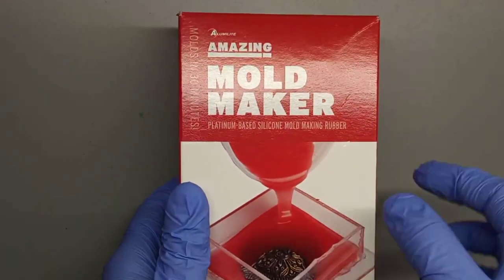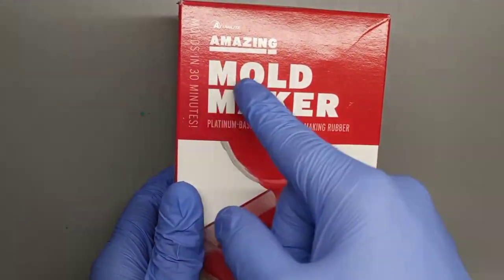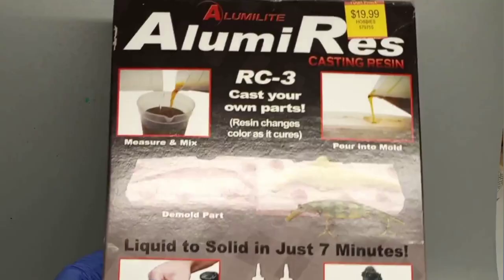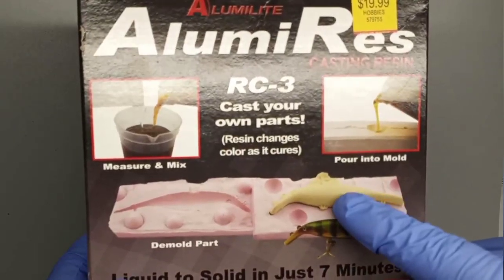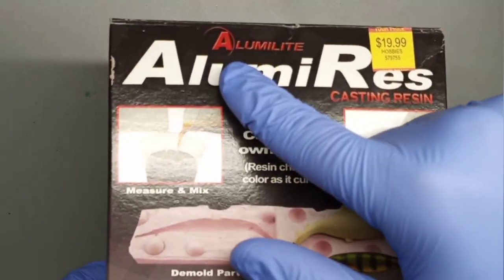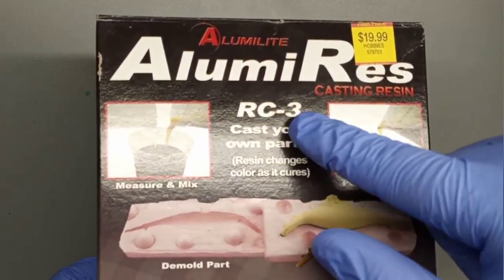Hello, in this tutorial I'm going to show you how to make your own molds using Amazie Mold Maker by Alumilite. I will also show you how to resin cast using Alumiresse RC3 by Alumilite.